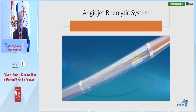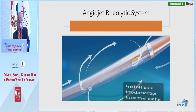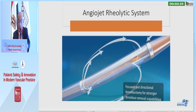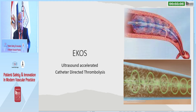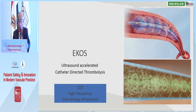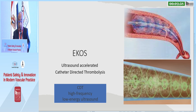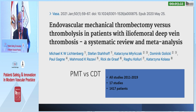The AngioJet rheolytic system injects heparinized saline, producing a vortex current which sucks out the thrombus. And finally, ultrasound-accelerated catheter-directed thrombolysis — the EKOS system — uses a catheter which produces high-frequency, low-energy ultrasound that fragments the fibrin clot, thereby improving the function of the thrombolytic agent.